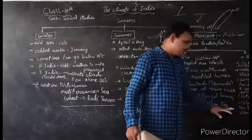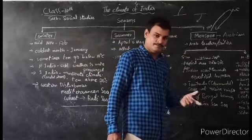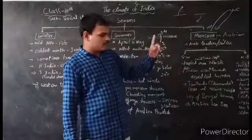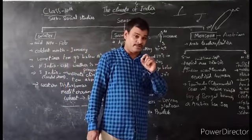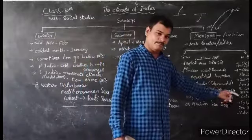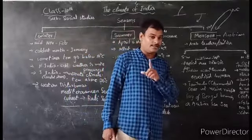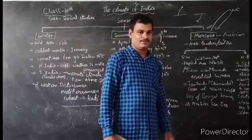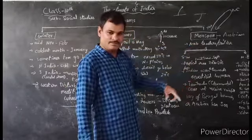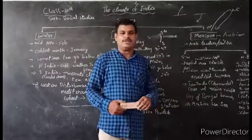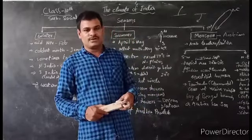During this period, cyclonic depressions are mainly found in the Bay of Bengal. During the Northeast monsoon season, India receives rainfall from these cyclonic depressions. Particularly during the time of Diwali, we generally get rainfall from cyclones, and most coastal areas receive the most rainfall from these cyclones.